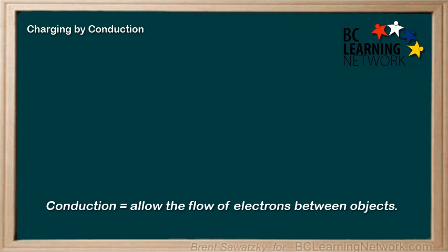To charge by conduction, we start with one charged object and we use it to charge another object, usually a neutral object, by allowing electrons to flow between them.